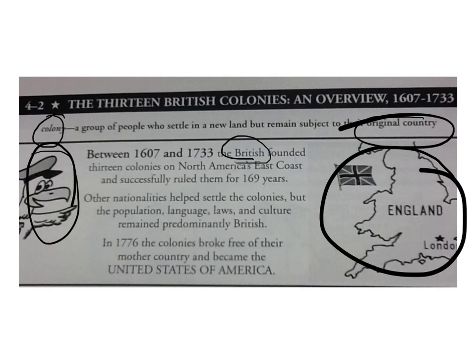Other nationalities helped settle the colonies, but the population, language, laws, and culture remained predominantly British — that means mostly. In 1776, the colonies did break free of their mother country and became the United States of America.